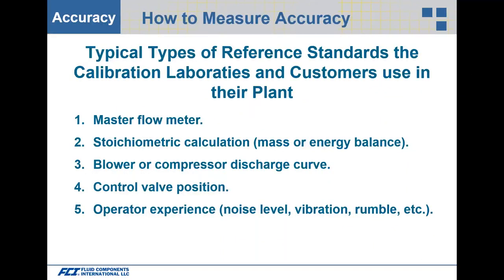Regarding reference standards, in a laboratory or calibration facility we typically use a master flow meter — a DP meter or a turbine meter. When installed at a customer site, customers typically use stoichiometric calculations: what goes in must equal what comes out — mass or energy balance, blower or compressor discharge curves, control valve position, and even operator experience.